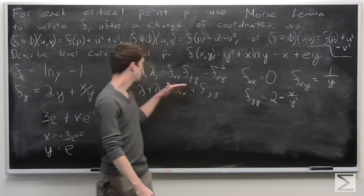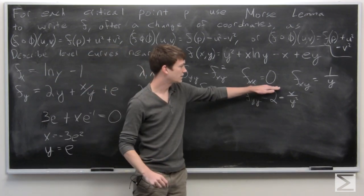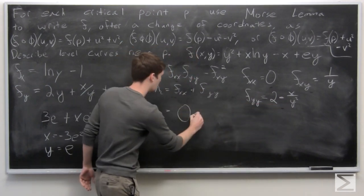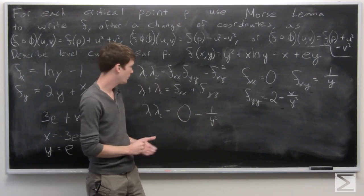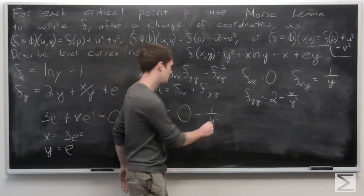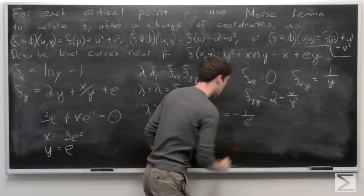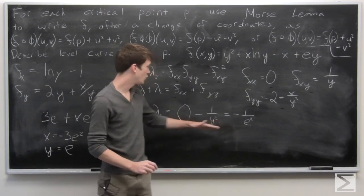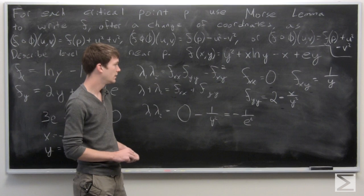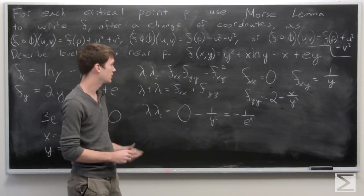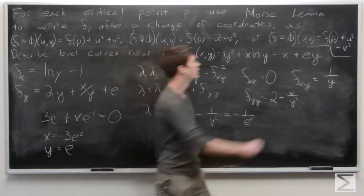Plugging into the formula, lambda 1 times lambda 2 equals f sub x,x times f sub y,y minus f sub x,y squared, which equals 0 minus 1 over y squared. Evaluating at our critical point where y equals e, we get negative 1 over e squared. Since lambda 1 times lambda 2 is negative, lambda 1 and lambda 2 have opposite signs, and we can stop there — we don't need to solve for them explicitly.